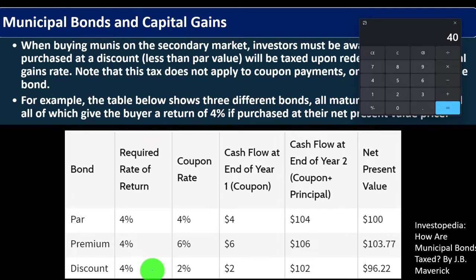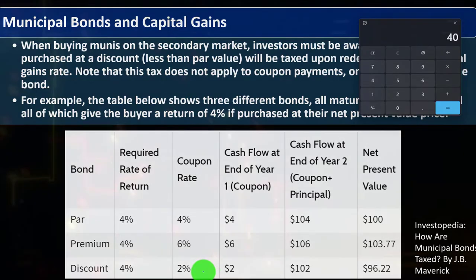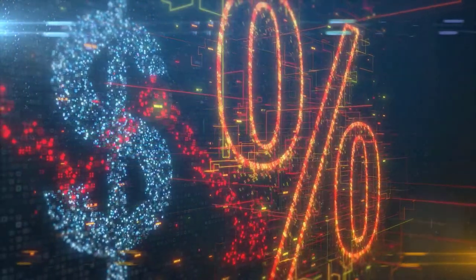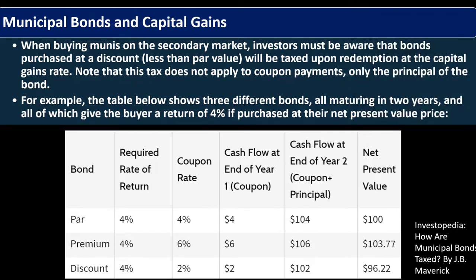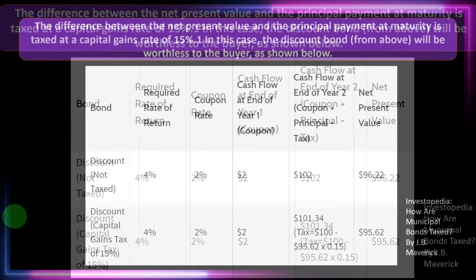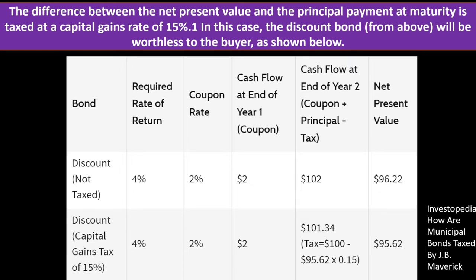For the discount bond, the required market rate is four percent but the bond's coupon rate is two percent — set when the bond was issued. We can't increase the rate to match the current market, so we adjust the price downward. Cash flow at end of year one is two dollars; at end of year two — coupon plus principal — it's 102 dollars. The net present value is 96.22. The price is adjusted below face value because the coupon rate is lower than the market's required rate of return.